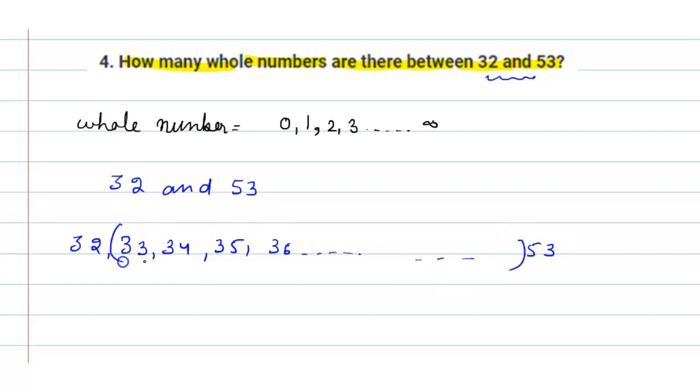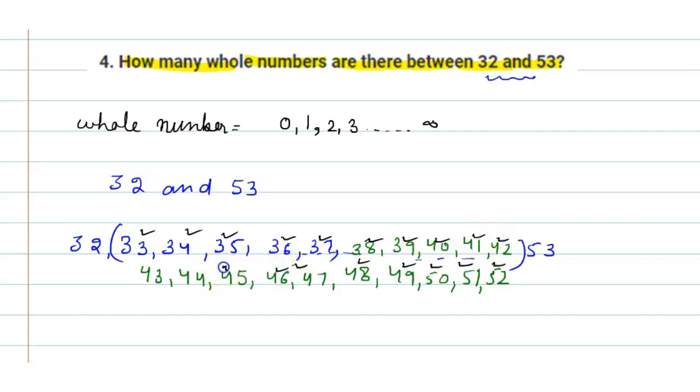Now we will count here the numbers between 32 to 53. So it will be 1, 2, 3, 4, 5, 6, 7, 8, 9, 10, 11, 12, 13, 14, 15, 16, 17, 18, 19, 20. So whole numbers between 32 and 53 is 20 whole numbers.